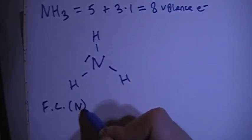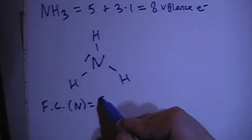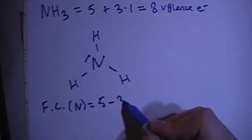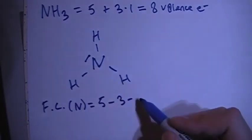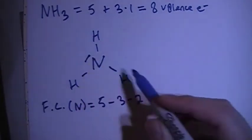So the formal charge on nitrogen is going to be 5 valence brought in minus 3 bonds, 1, 2, 3, minus 2 non-bonding electrons, which is a formal charge of 0.